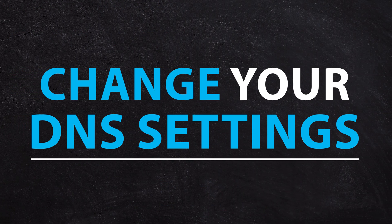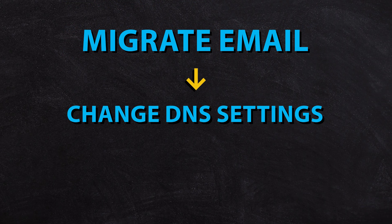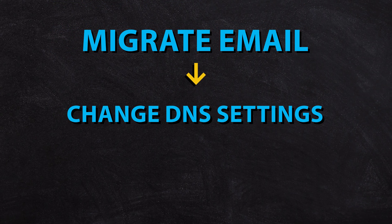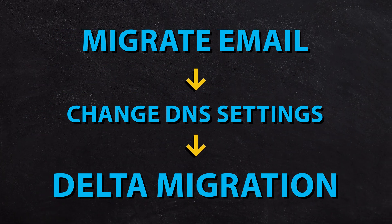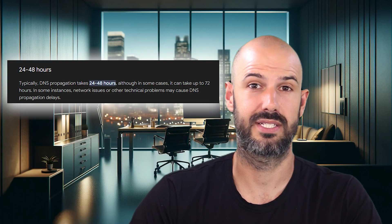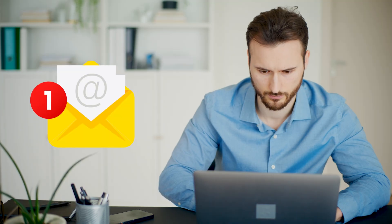The next step is you need to change your DNS settings. We typically recommend you first migrate your emails, then change your DNS settings, and then do what we call a delta migration — migrating just the emails that have come in since you changed the DNS records. DNS records can take up to 48 hours to propagate across the world, so sometimes you'll still have emails going to your old email service after you've cut over.